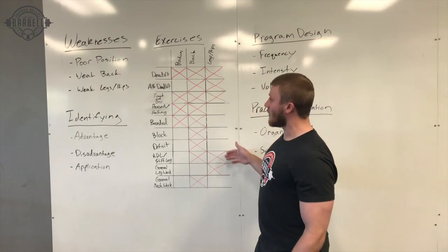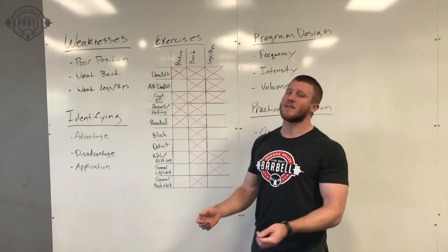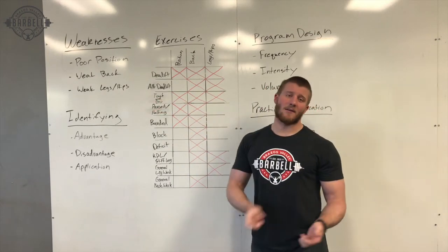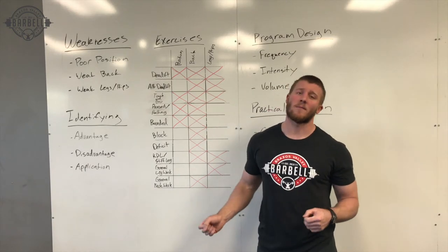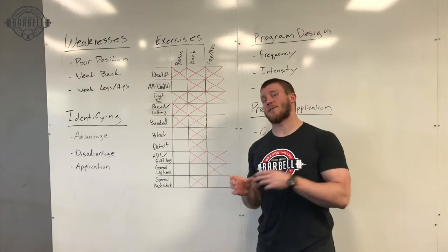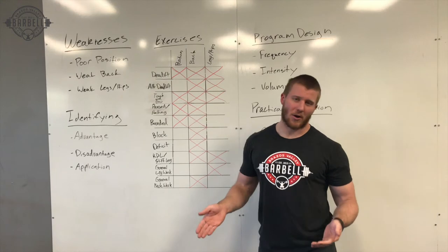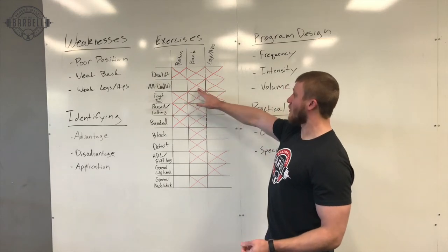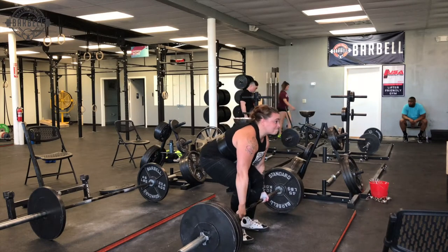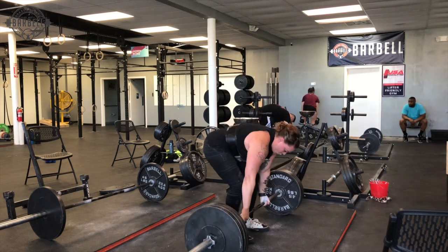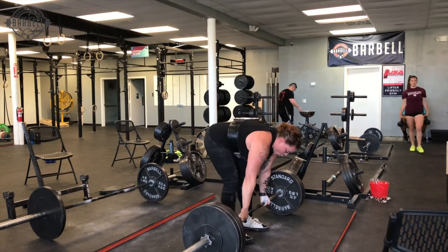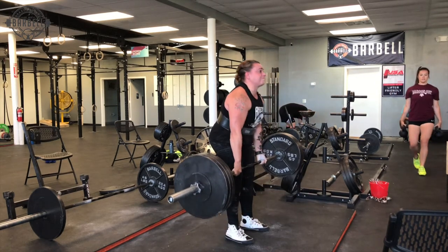There are ways to potentially target more specific weaknesses with variations. The alternative deadlift basically means that as a conventional deadlifter you deadlift sumo, or as a sumo deadlifter you deadlift conventional. The sumo deadlifter going to conventional probably has more carryover — doing conventional deadlifts will make the sumo deadlifter's back substantially stronger. While it's not very specific, it's still a deadlift from the same height that makes their hamstrings and back stronger when they don't get much use during their sumo deadlifts.